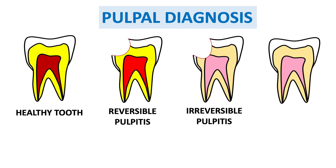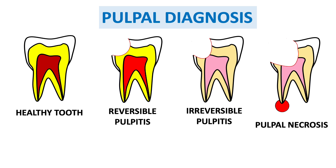The third one shows caries involving part of the pulp horn — this is a case of irreversible pulpitis, which is difficult to treat without endodontic therapy. In the fourth one, when a tooth is grossly decayed for a long time, it results in abscess formation with periapical pathology. The pulp becomes completely dead — this is pulp necrosis — and infection reaches the apex.